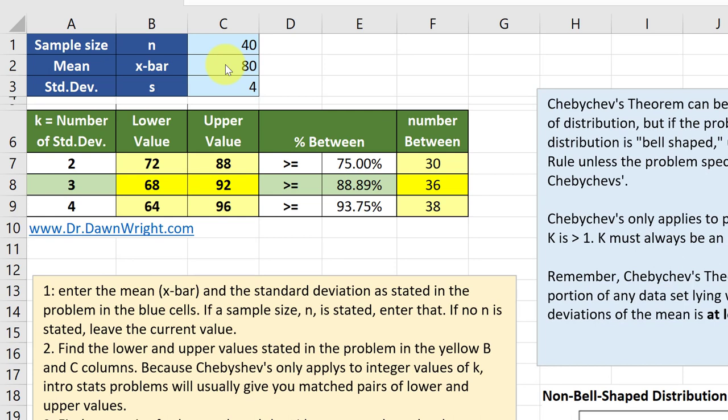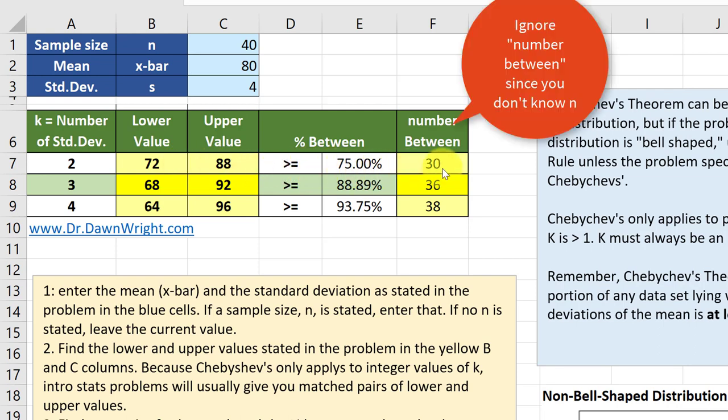We enter the data: mean of 80, standard deviation of 4, and we just leave n as it is because we don't know what it is. Reading across the k equals 2 row, we see at least 75 percent of the scores fall between 72 and 88.